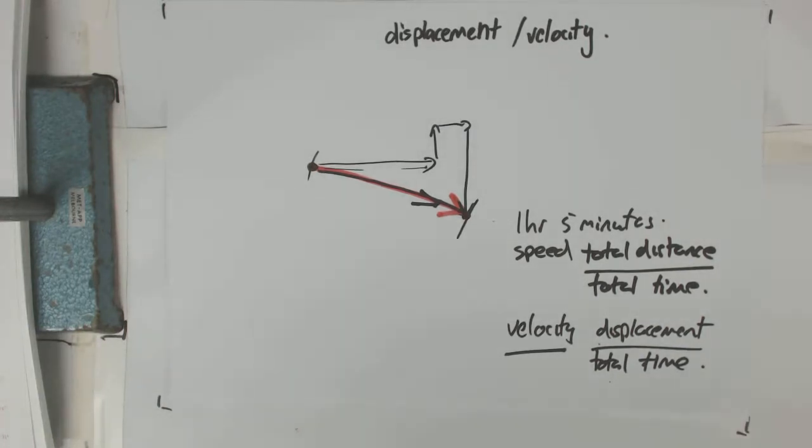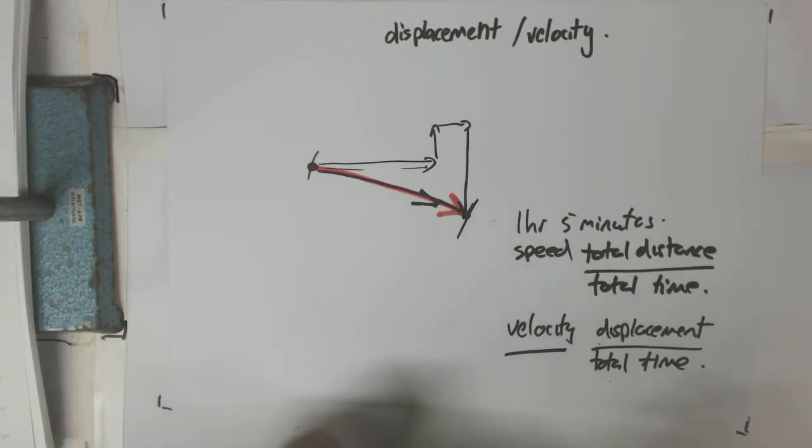So velocity is a vector. Displacement is a vector. Distance is not a vector. And time is not a vector.